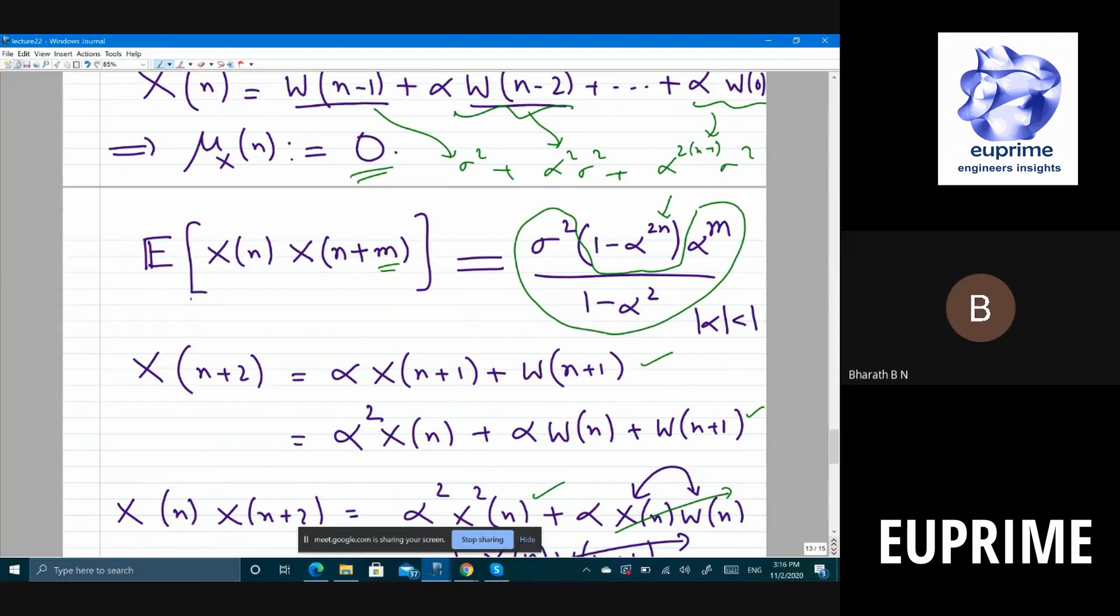In other words, it depends on the difference: n + m - n is m, right? So it is, in this case, asymptotically stationary. Meaning if you pick large n, practically it becomes stationary. It doesn't matter where you pick the two samples from. Essentially it depends on the difference, not on the absolute. Do you agree?